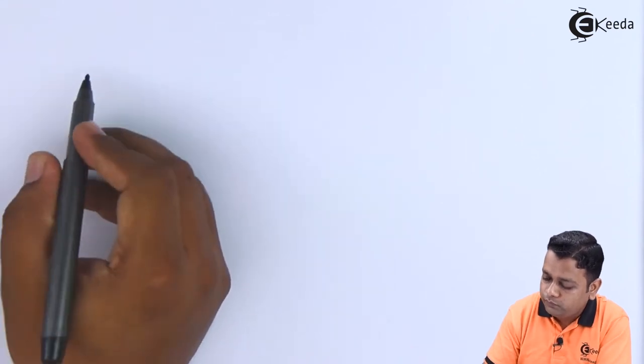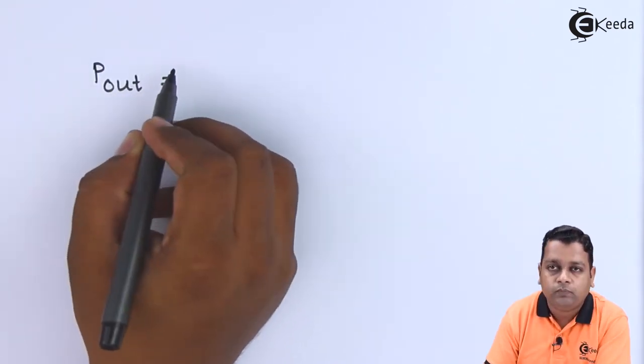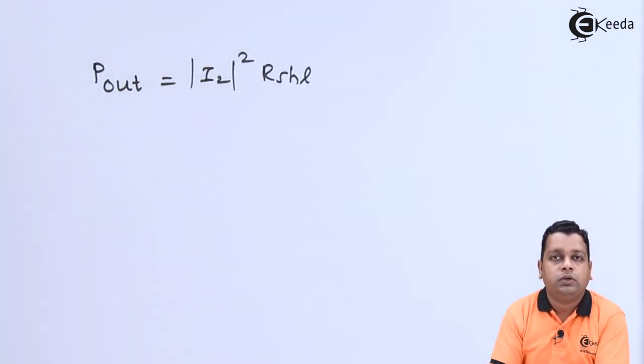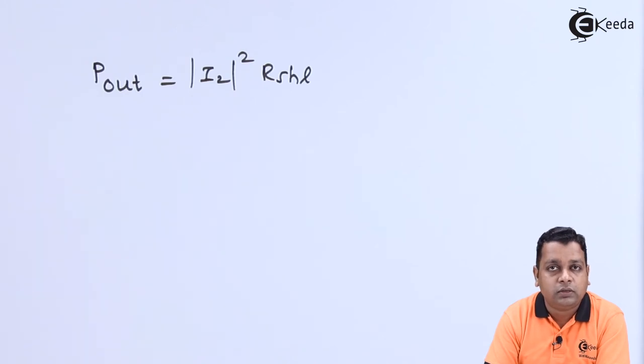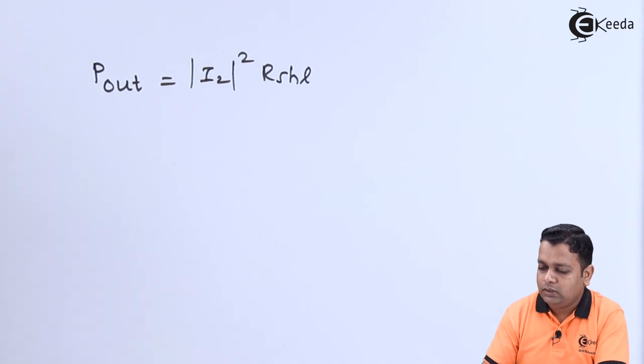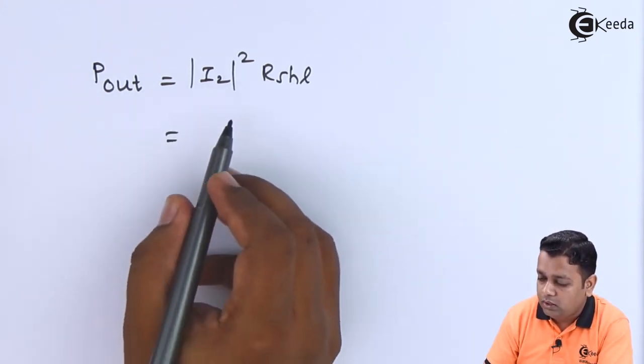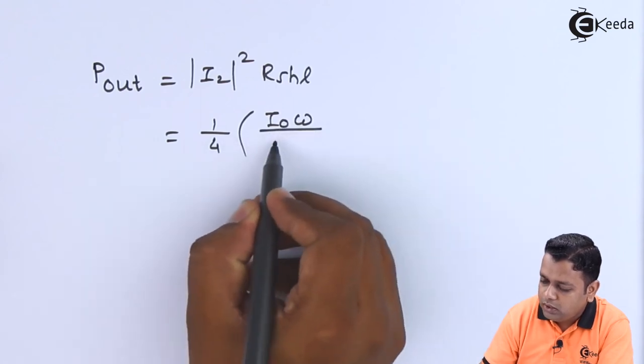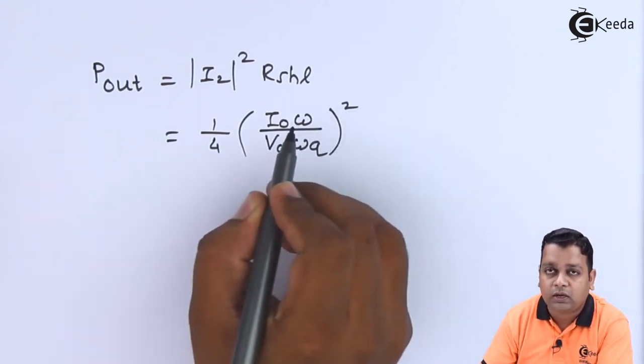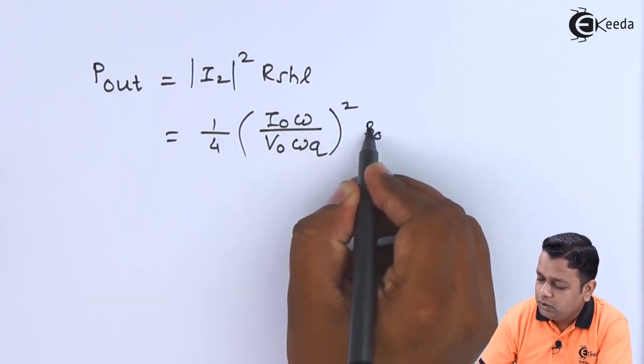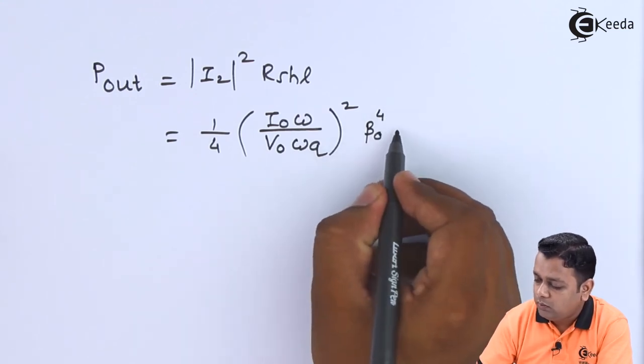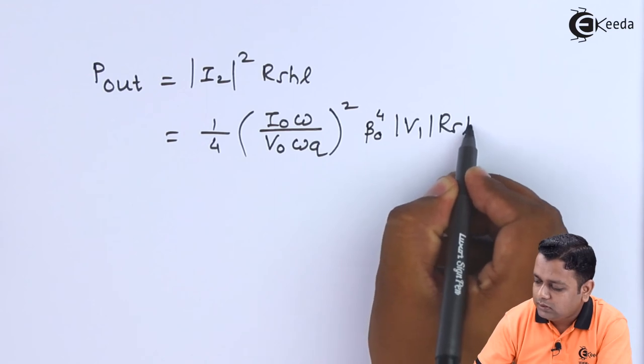Now the output power delivered to the load will be given by the formula: P_OUT equals mod of I2 that is squared into R_SHL. Considering the external loading, the losses in terms of output power can be given as I2R. So the substitution we need to make: as it is squared we get 1/4. In the bracket we must mention I0 omega divided by V0 omega_Q. This bracket is squared in multiplication to the output beam coupling coefficient which will be having a power 4. Mod of V1 into R_SHL here.